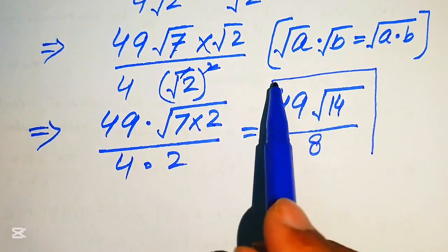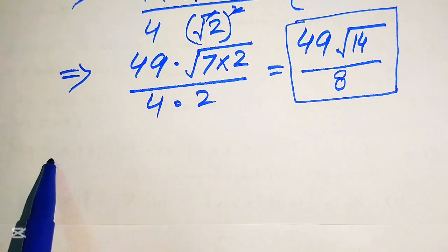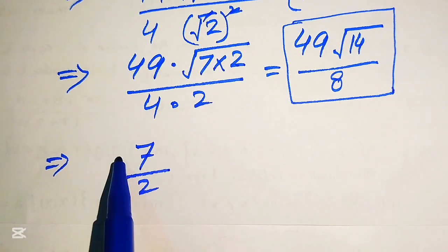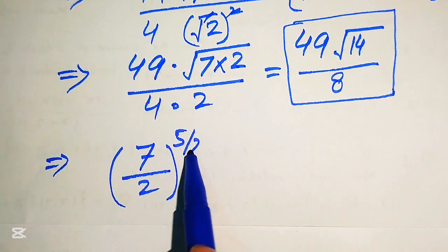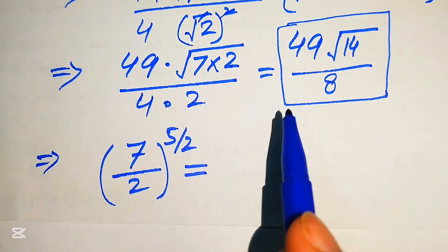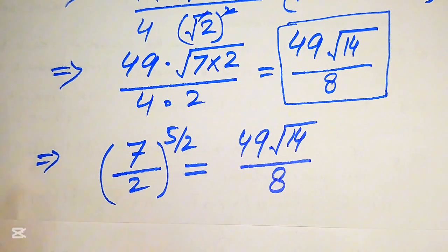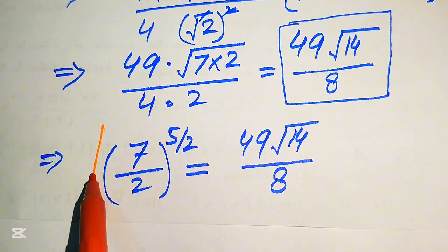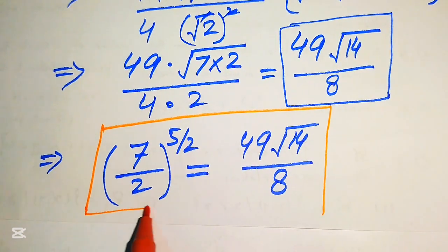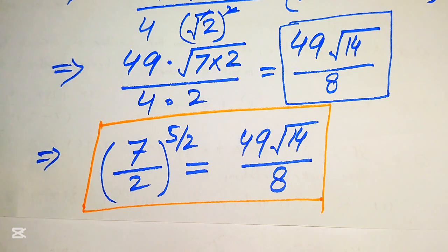This is our final simplified form. We have shown that (7 over 2) to the power of 5 over 2 equals 49 times the square root of 14, divided by 8. Thank you for watching — please comment if you have another method, and subscribe for more videos.